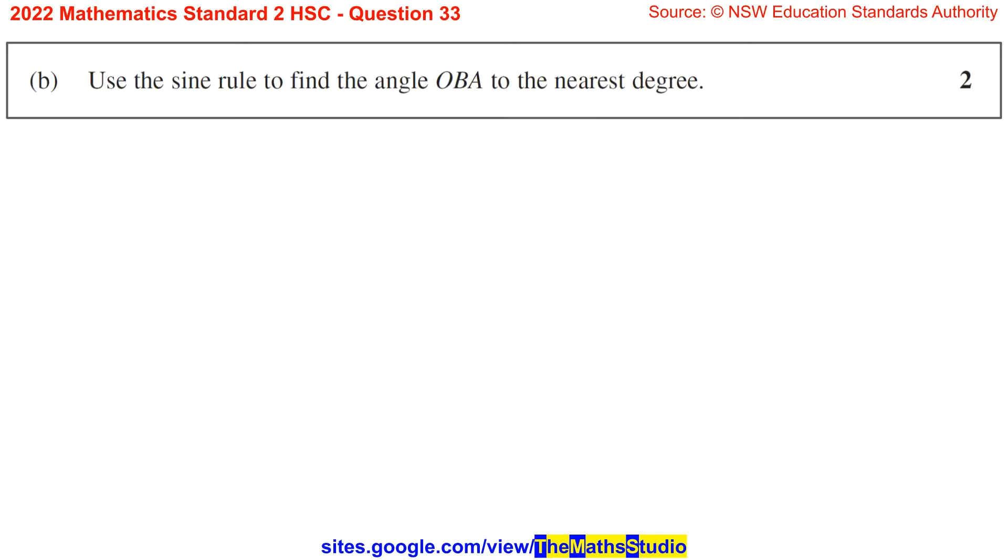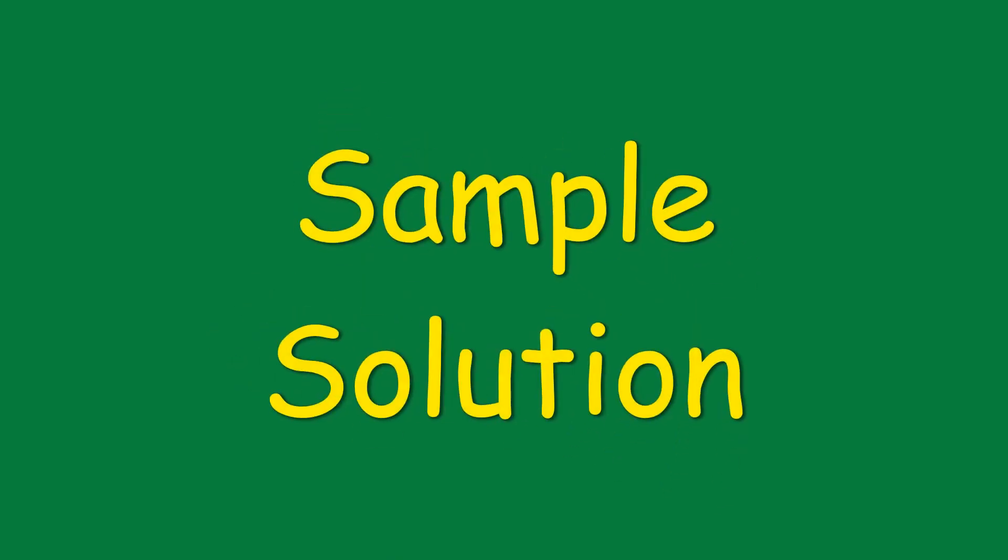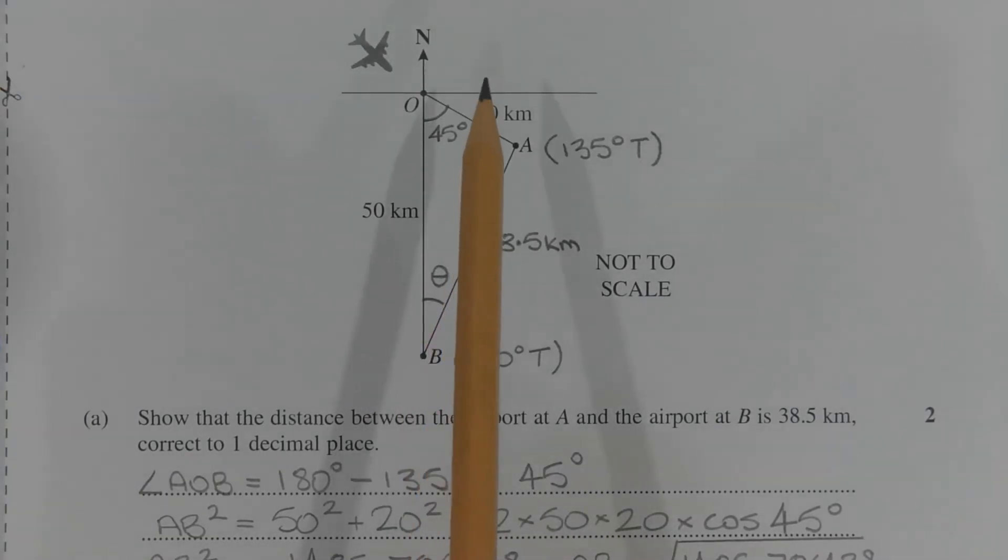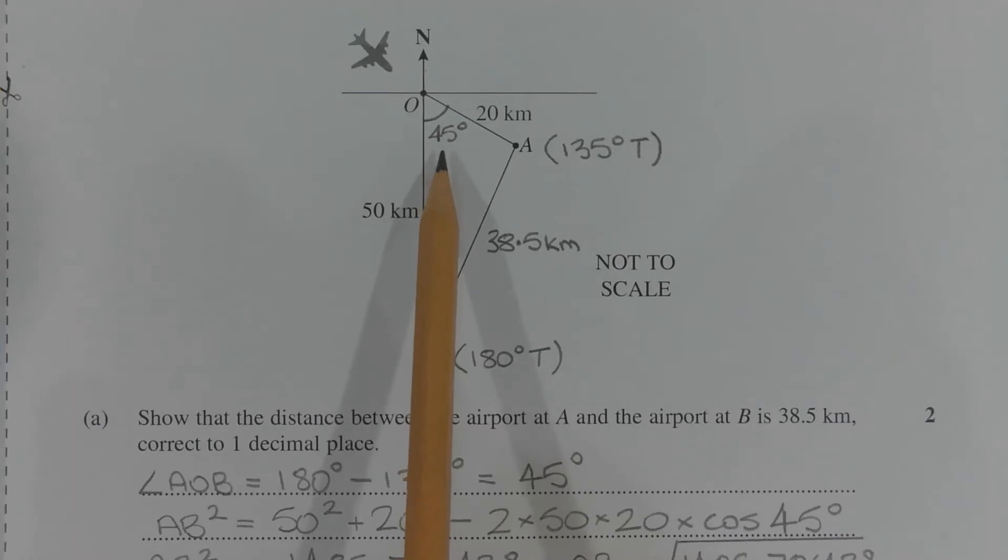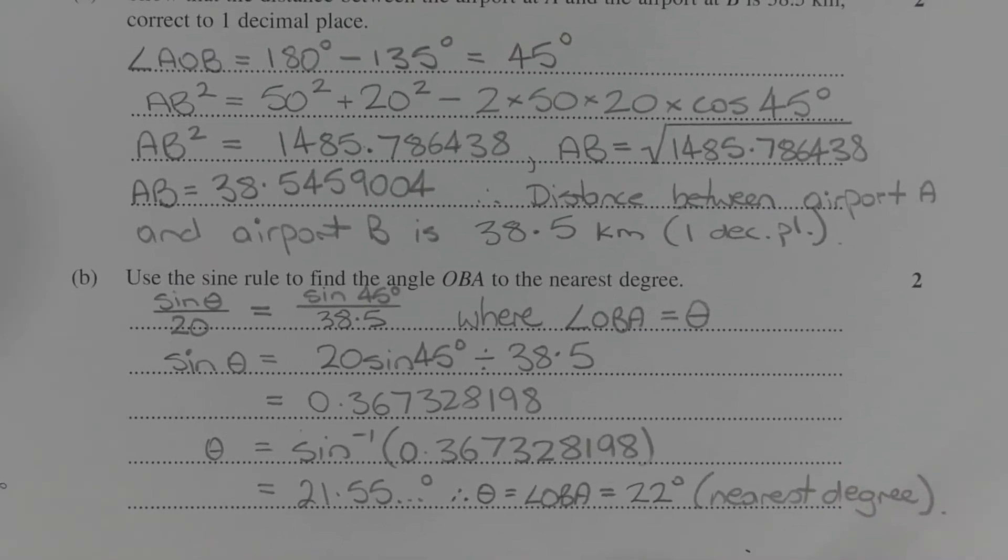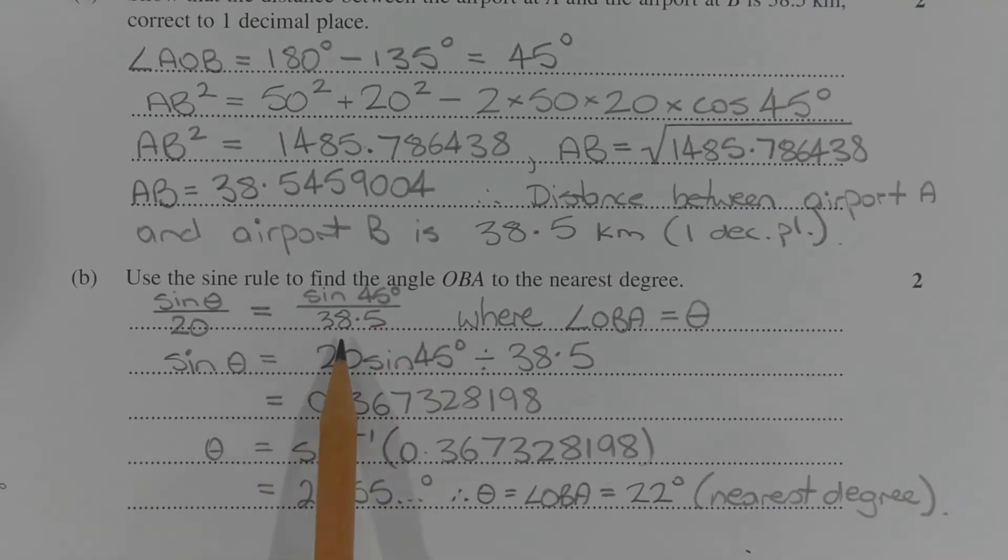Part B. Use the sine rule to find the angle OBA to the nearest degree. Let angle OBA be theta. Then using the sine rule, sine theta over 20 is equal to sine 45 degrees over 38.5. Writing that here, sine theta over 20 is equal to sine 45 degrees over 38.5, where angle OBA equals theta.